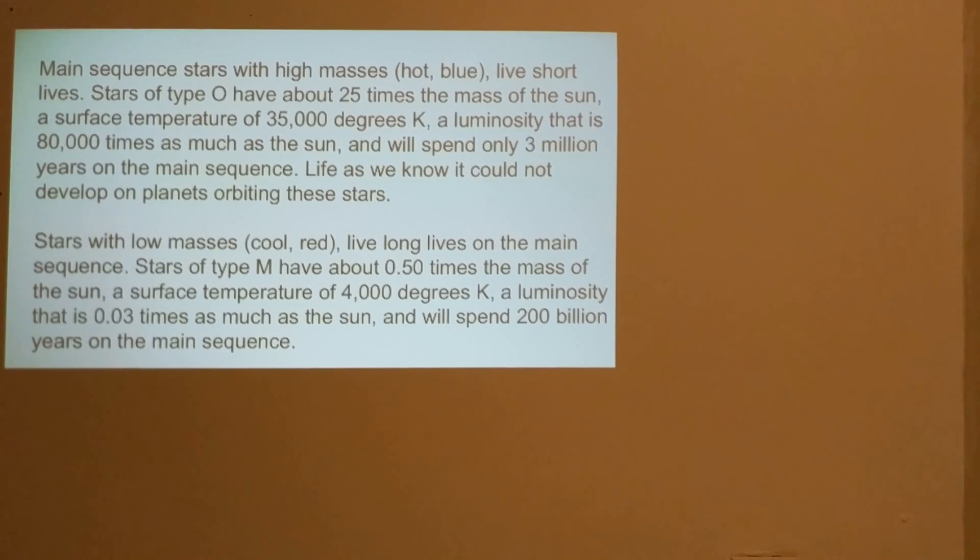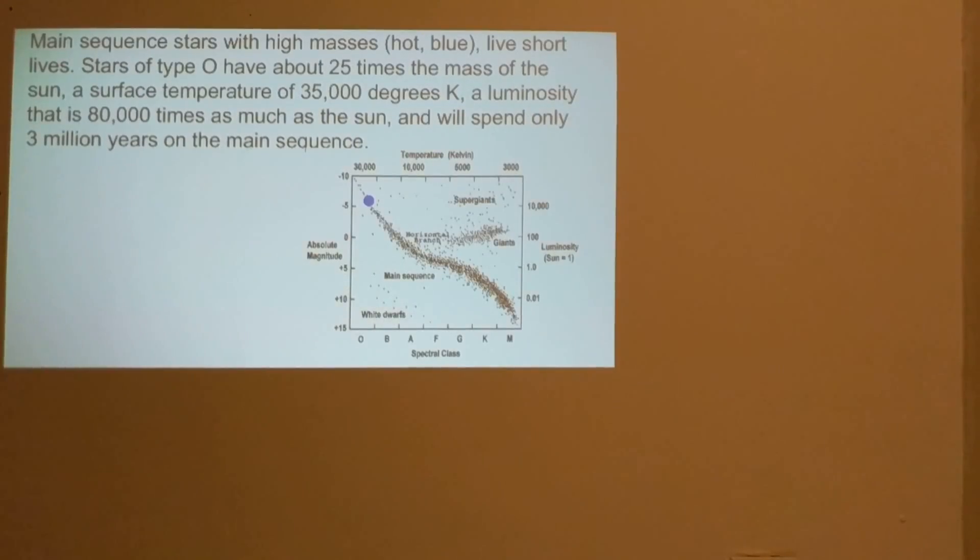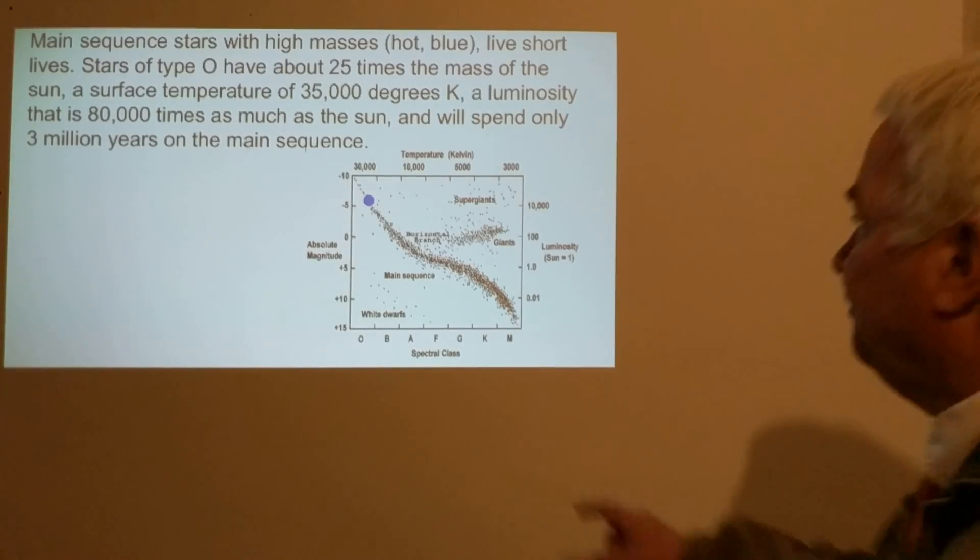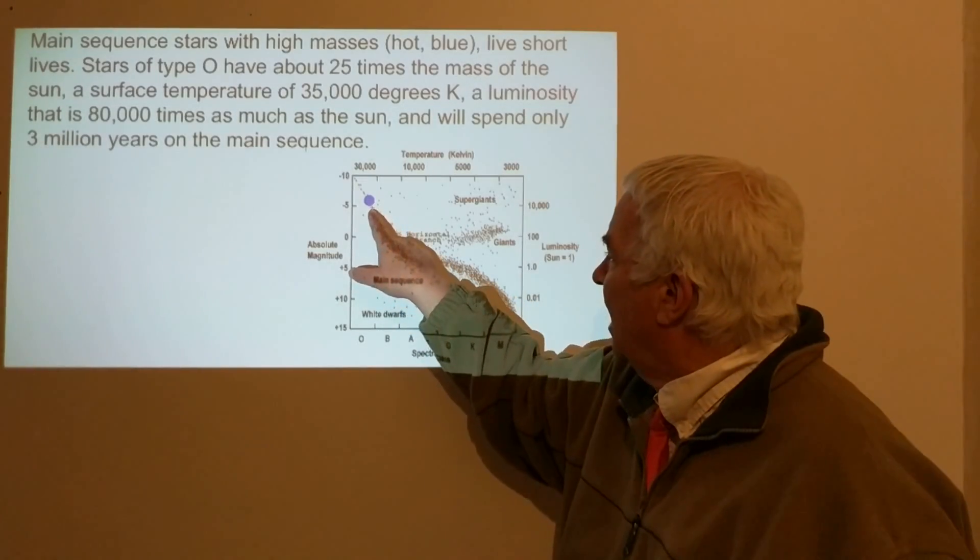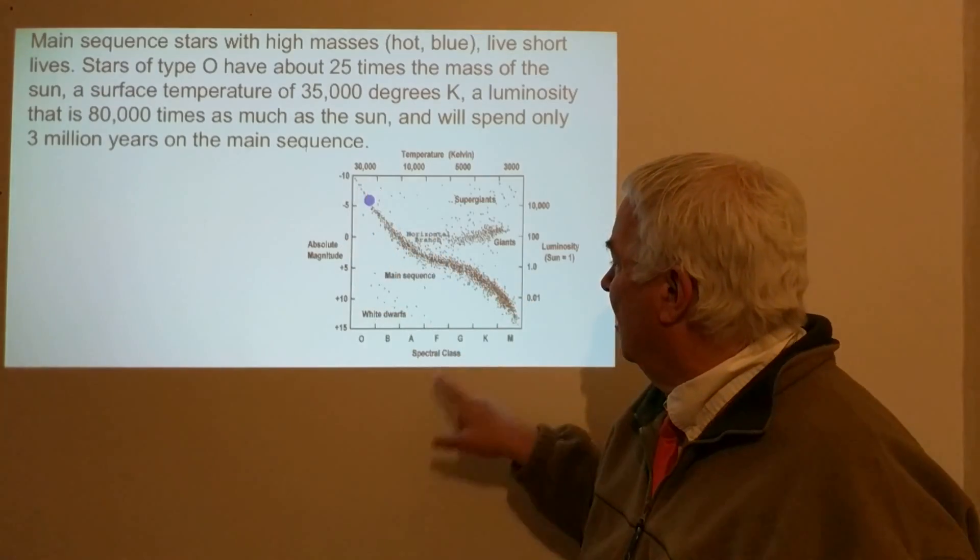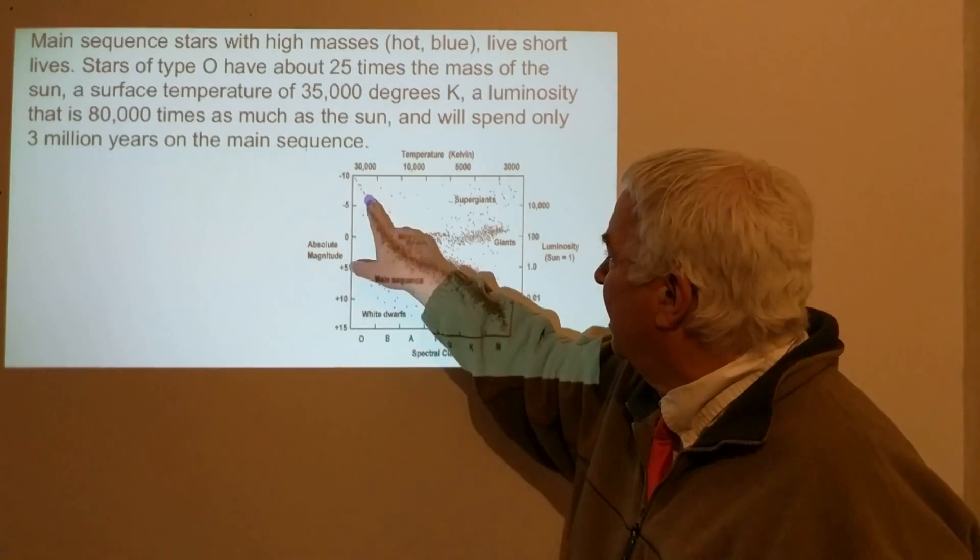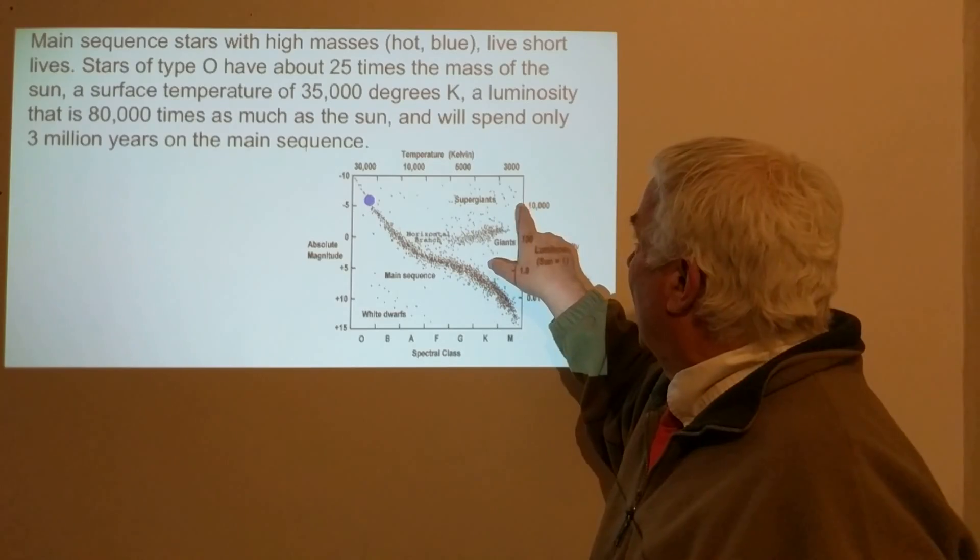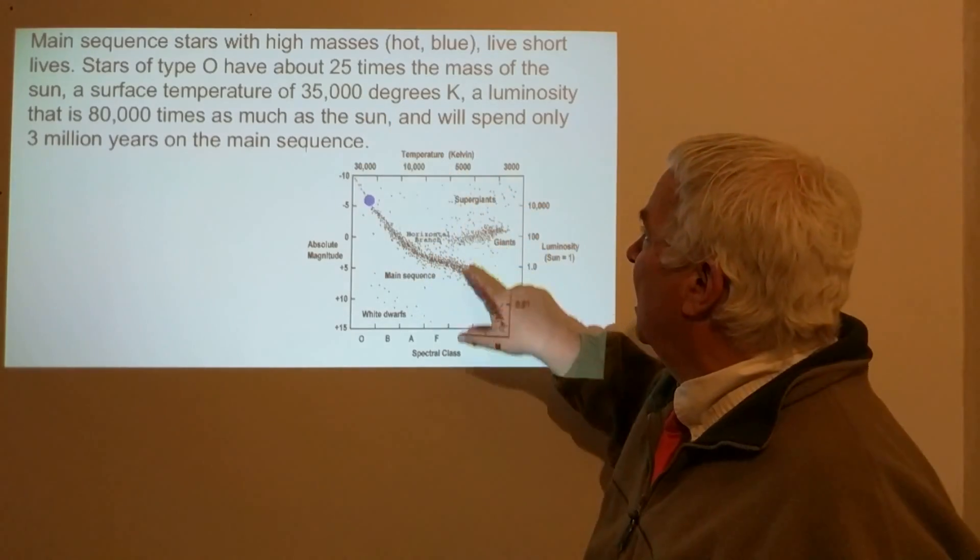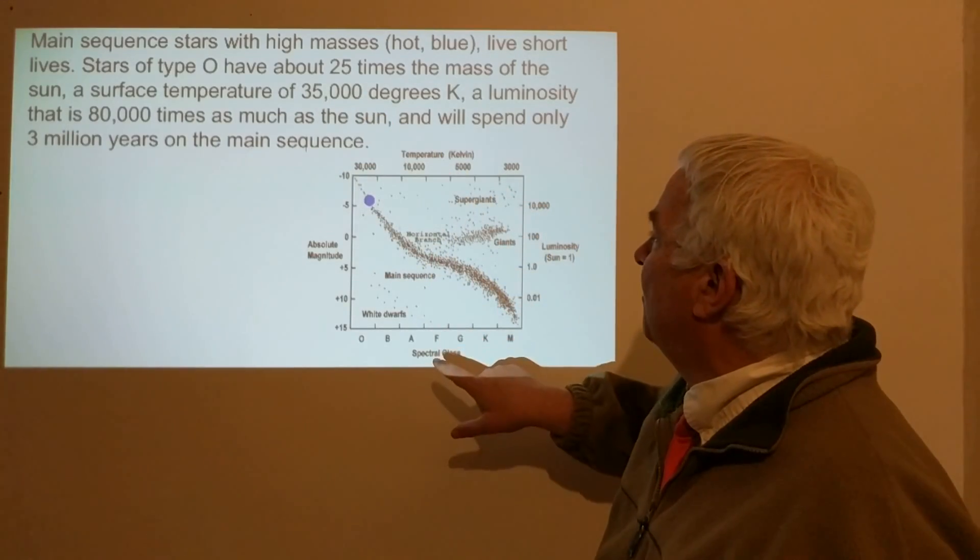Main sequence stars with high masses live really short lives. Stars with O and B type spectra types live much shorter lives. If we can look at this a little closer here with an HR diagram, we can see that the O-type star here that has a temperature of about 35,000 degrees.